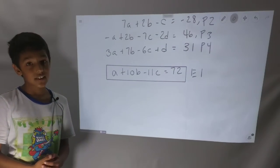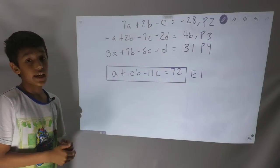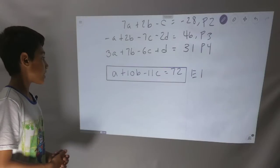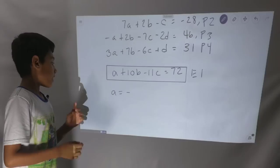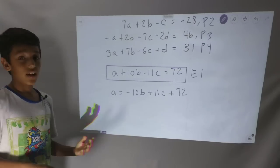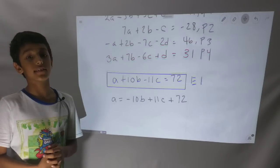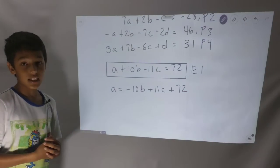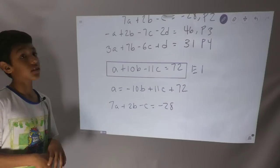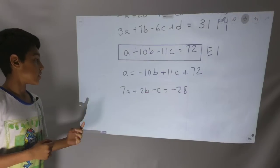Now we've eliminated all the D's. We can take equation E1 and isolate A — meaning we make A by itself. We subtract 10B from both sides and add 11C to both sides, and we get A equals negative 10B plus 11C plus 72. Now we can substitute that expression for A into P2 and E2, since both don't have D's.